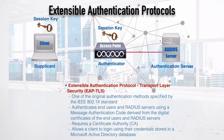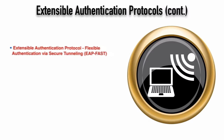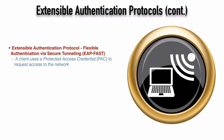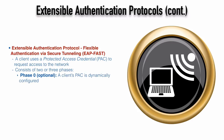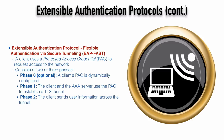Another extensible authentication protocol is EAP-FAST — Extensible Authentication Protocol, Flexible Authentication via Secure Tunneling. Here, a client has a protected access credential (PAC) that it uses to request network access. This can happen in two or three phases. Phase 0 is optional — it occurs when a client's PAC is dynamically configured rather than manually configured. Phase 1 is where the client and the AAA server use that PAC to establish a TLS tunnel between themselves. Once that tunnel is established, the client sends user information across it.